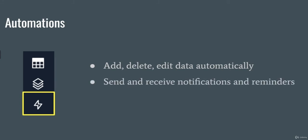Another thing automations can do is send and receive notifications and reminders. Whenever you send a vacation request, your manager will get a custom notification telling him someone sent a request, so he can go into the app and approve or reject it. And whenever your manager approves or rejects it, the employee will get a custom notification telling them whether it got approved or rejected.